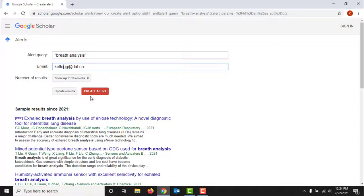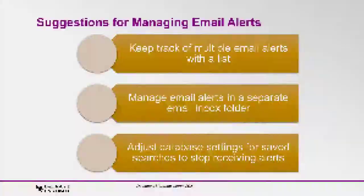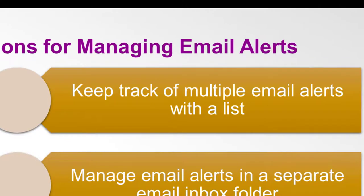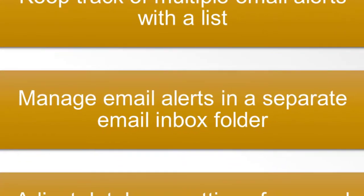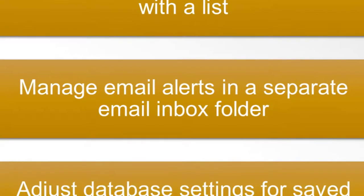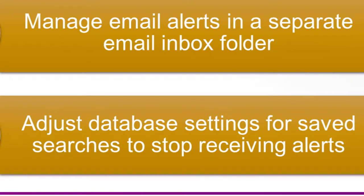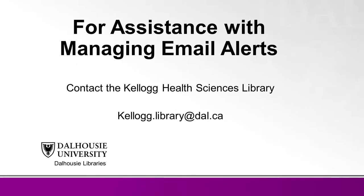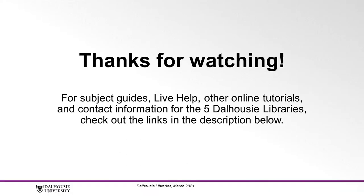As you gain an appreciation for the convenience of staying current with email alerts, you may find yourself setting up email alerts on multiple topics in many databases. It might not be a bad idea to keep track of the alerts you have set up in a list, and to use any available feature in your email software to transfer alerts from your inbox to a dedicated folder. When you would like to stop receiving alerts, you can do this by adjusting the settings in your saved searches within these three databases. If you need help doing this, a librarian will be happy to assist. You can reach out to the Kellogg Library by emailing kellogg.library@dal.ca. You can also reach out to us if you would like advice on searching any of the databases mentioned in this video. Thanks for watching!